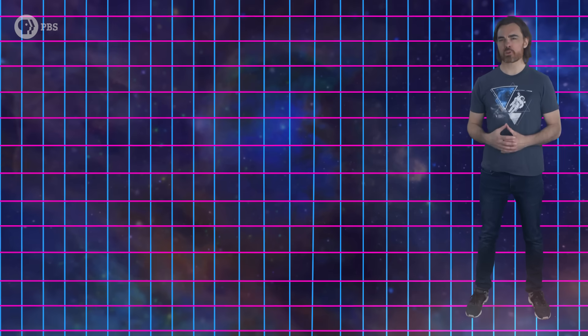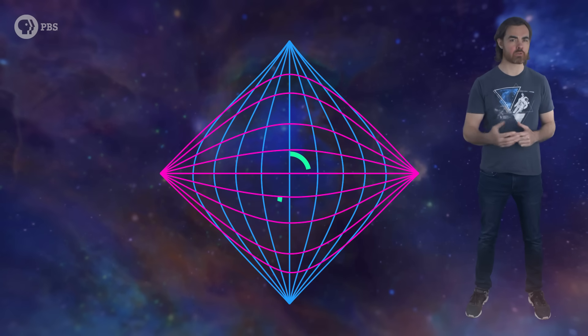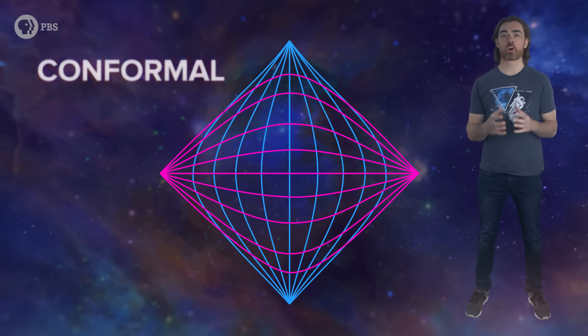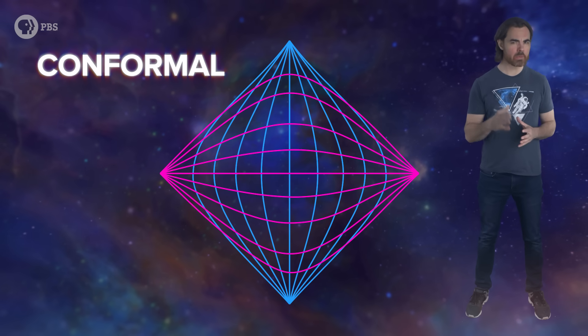One amazing thing about the Penrose diagram is that the transformation preserves all internal angles. All angles between intersecting lines relative to each other stay the same. We call such a transformation conformal. And remember that word – it's going to be very, very important.